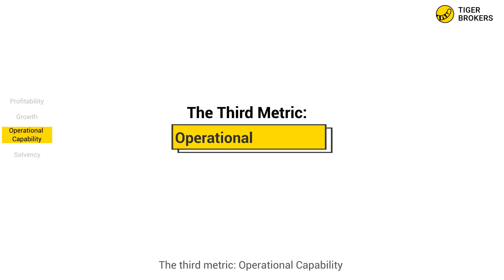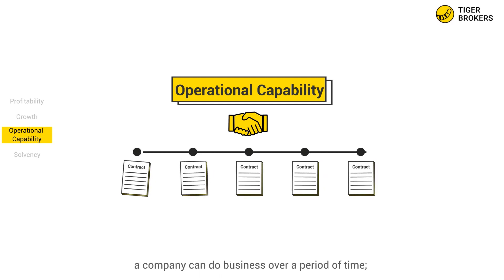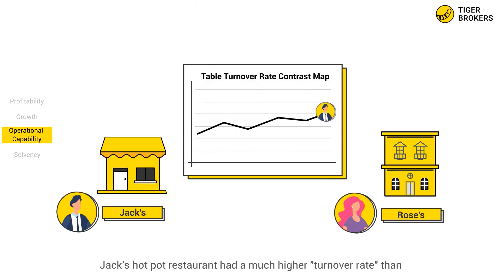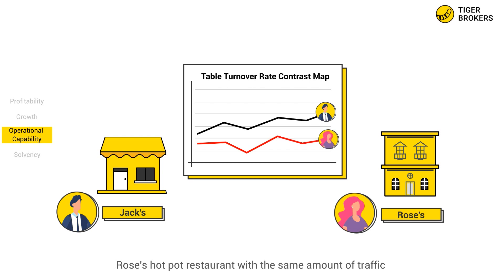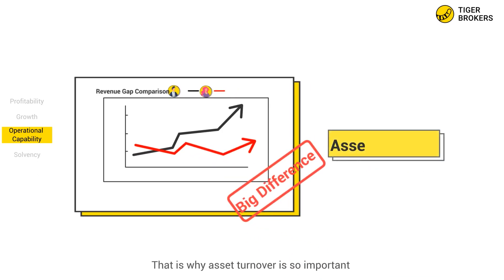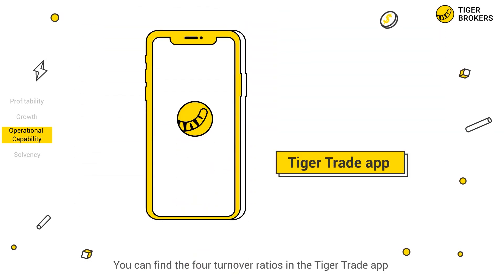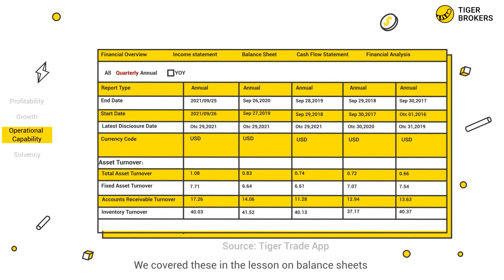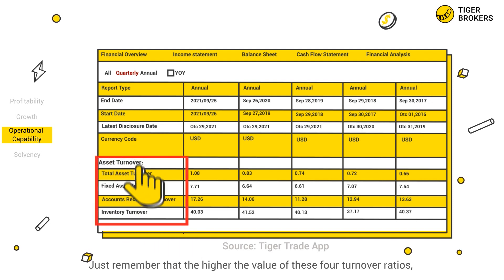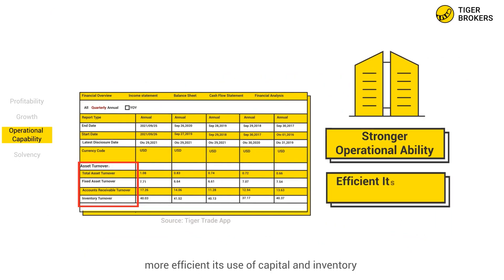The third metric: operational capability. Operational capability is a measure of how many times a company can do business over a period of time. Using the example we gave previously in the course, Jack's Hot Pot Restaurant had a much higher turnover rate than Rose's Hot Pot Restaurant with the same amount of traffic, which translated into a big difference in revenue between the two businesses. That is why asset turnover is so important. You can find the four turnover ratios in the TigerTrade app. Just remember that the higher the value of these four turnover ratios, the stronger a company's operational ability and the more efficient its use of capital and inventory.